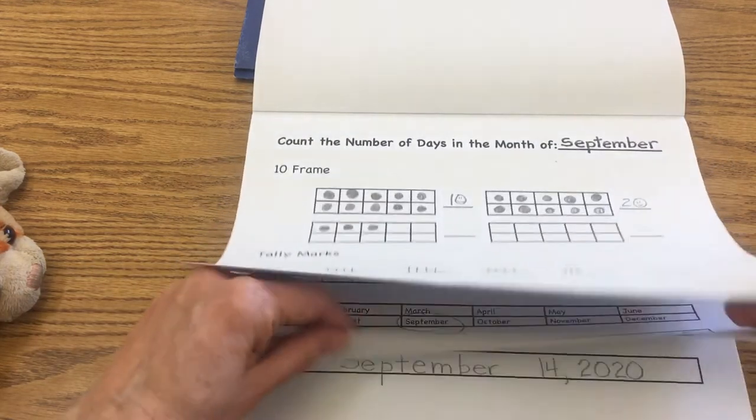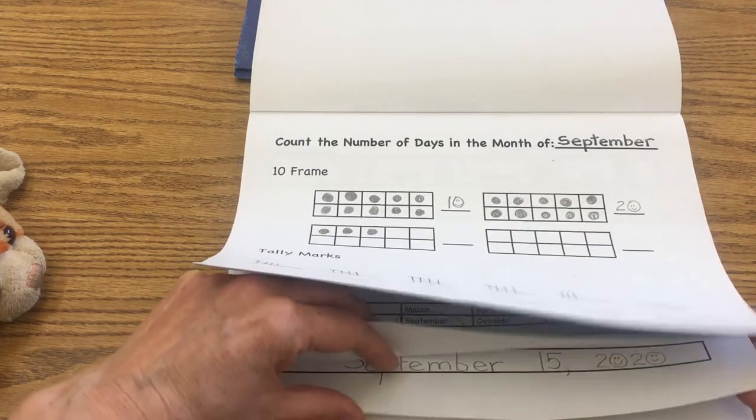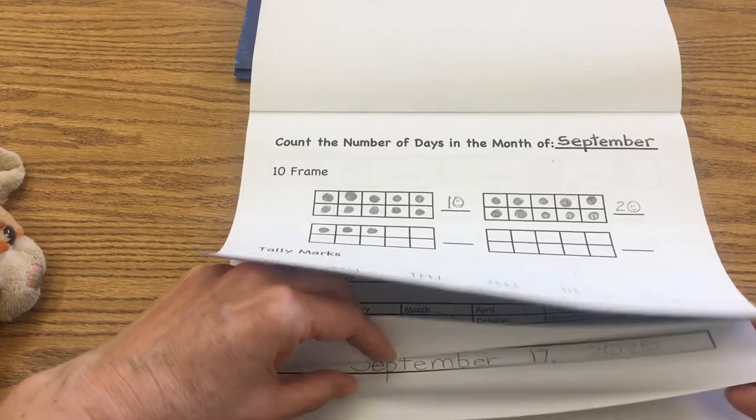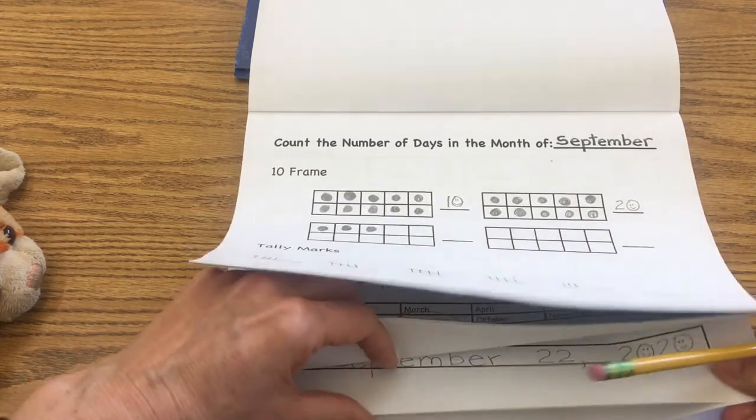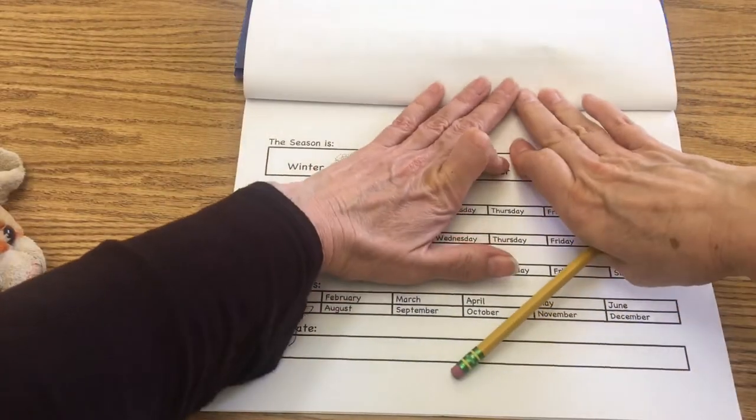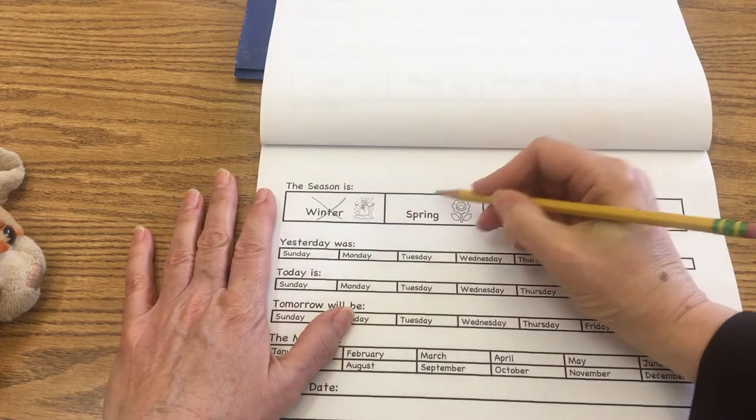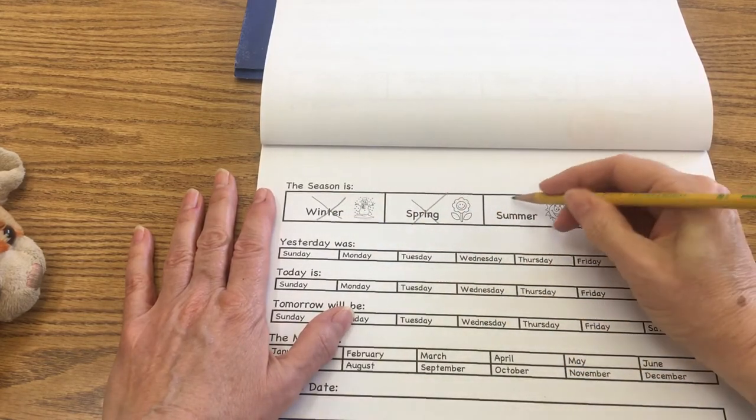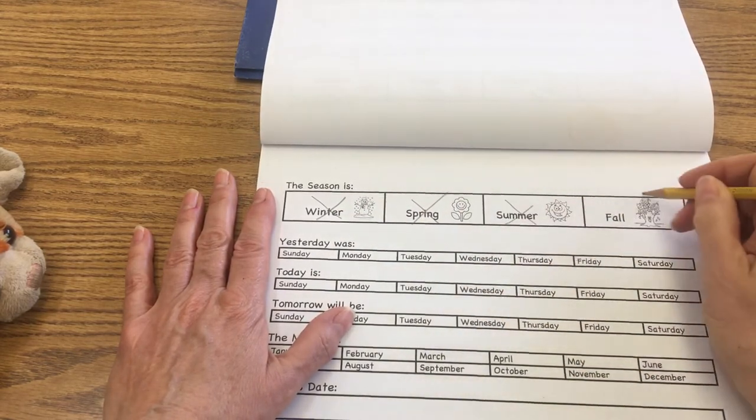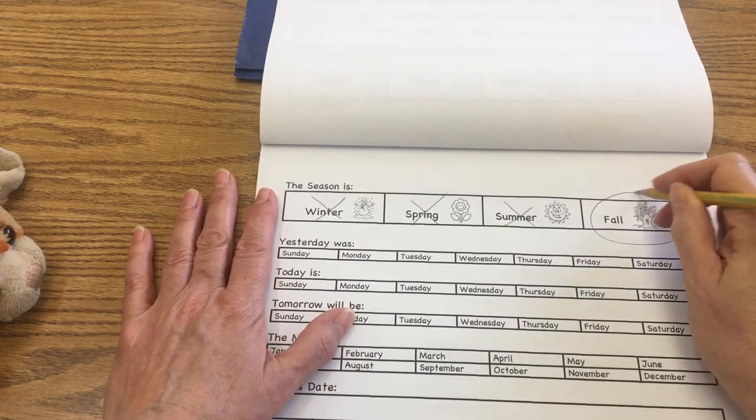So then I'm going to lift my pages. That will help me remember that today is the 23rd. I'm going to lift my pages, and here we go. Is the season winter? No. Is the season spring? No. Is the season summer? No. This season is fall, our second day of fall.